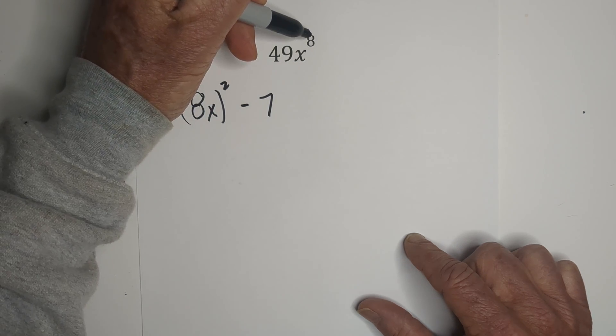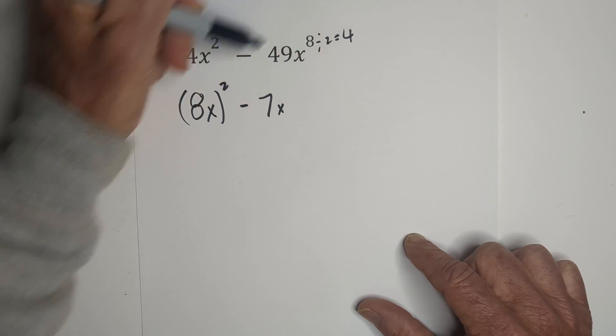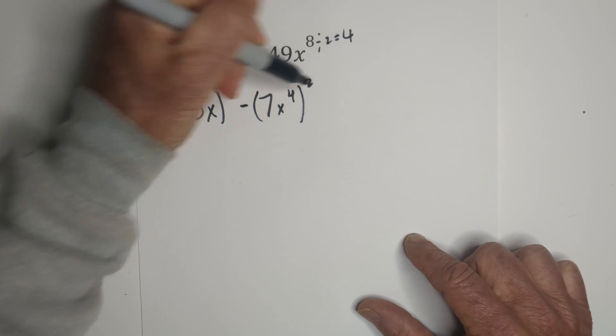I'm going to divide the exponent by 2. 8 divided by 2 equals 4. So we're going to have 4 here.